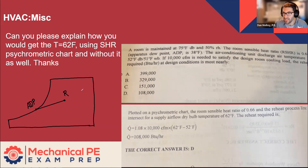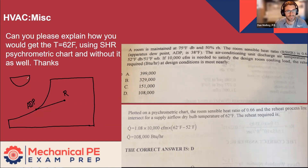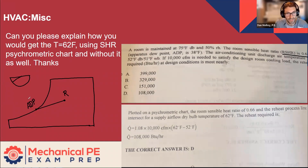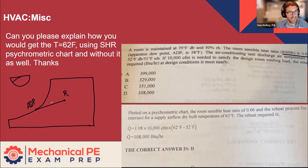Another way to communicate the same information: there used to be a protractor on the psychometric chart where you could figure out the sensible heat ratio if you knew the sensible and latent load and the total load, and then you could draw a line on this protractor. When it was paper and pencil, you could move the protractor onto the chart and draw a line parallel to that line, and you would know you've got exactly the right room sensible heat ratio.